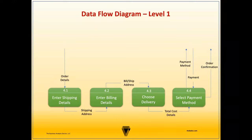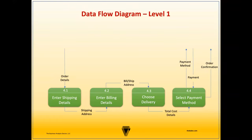The flow of data in the Level 1 diagram is as follows: order details are received, the customer enters shipping details, providing the shipping address to validate if billing and shipping details are the same. The address information is sent to the delivery section so the customer can choose the delivery method. Based on the method chosen, total cost details are calculated and sent to the payment screen, where the customer enters the payment method retrieved from payment details on file. The system checks fund availability, and upon payment, an order confirmation is sent to the customer.